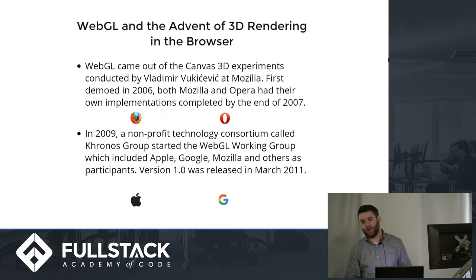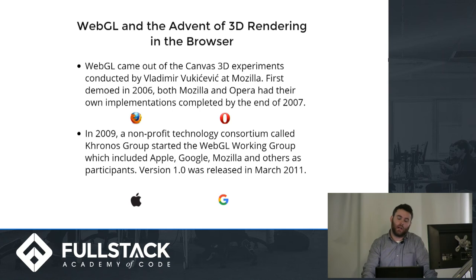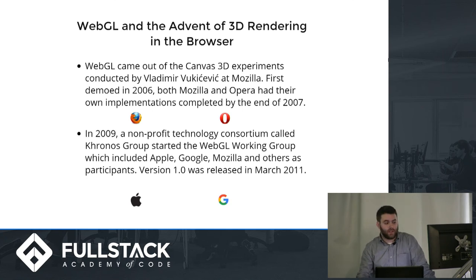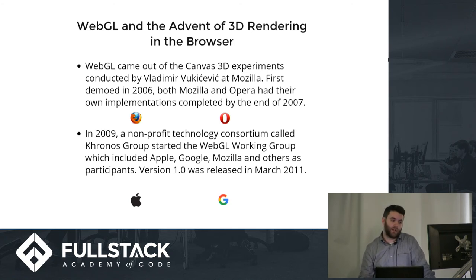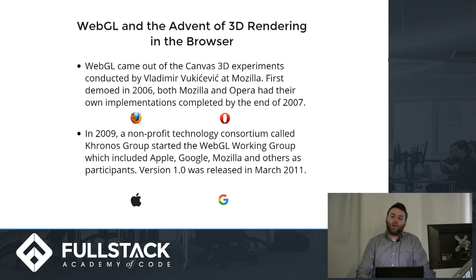WebGL and the advent of 3D rendering in the browser. WebGL came out of canvas 3D experiments conducted by a Mozilla engineer named Vladimir Vukacevic, who first demoed these in 2006. By the end of 2007, both Mozilla and Opera had complete implementations of WebGL. In 2009, a non-profit group called the Khronos Group started the WebGL Working Group, which included Apple, Google, Mozilla, and many others, to provide a single standard. In 2011, WebGL 1.0 was released.